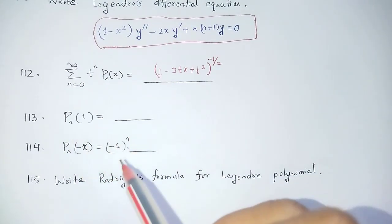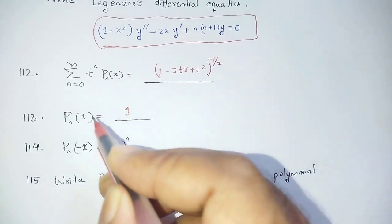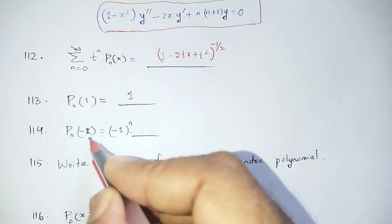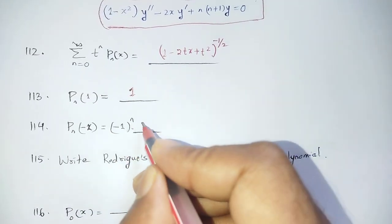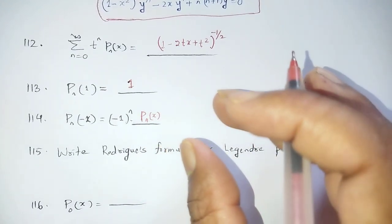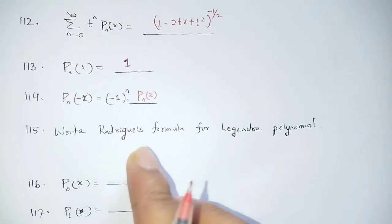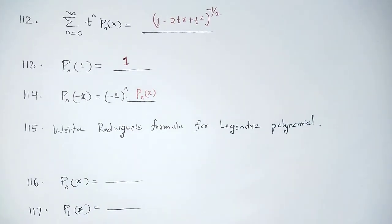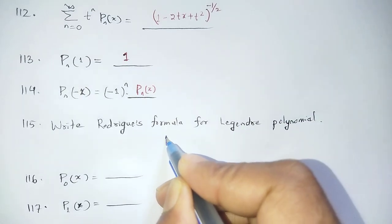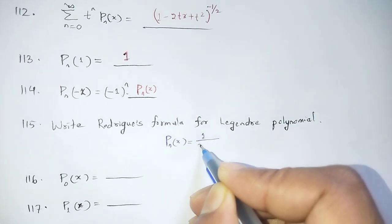Next: Pn(1) equals 1 — this is the value of the Legendre Polynomial at x=1. Also, Pn(-x) equals (-1)^n Pn(x).